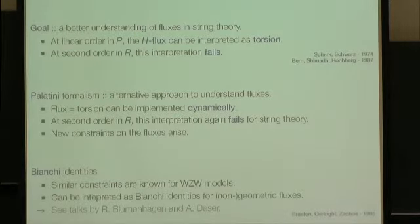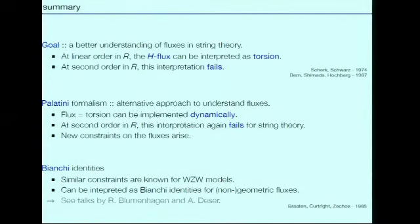Our goal was to understand fluxes better in string theory. We knew that at linear order in R, the H fluxes can be interpreted as torsion, but at higher order this fails. We wanted to understand that with the Palatini formalism, where we managed to identify the fluxes as torsion dynamically. But again, at second order, this interpretation fails for the string theory action. However, we saw that for this Palatini formalism to make sense, we have to have new constraints on these fluxes, which can be interpreted as Bianchi identities. This got us onto the track for the next papers where we studied Bianchi identities for these non-geometric fluxes in more detail. Ralph already talked about this, and Andreas will talk about this in more detail. Sorry for my voice, and thanks.